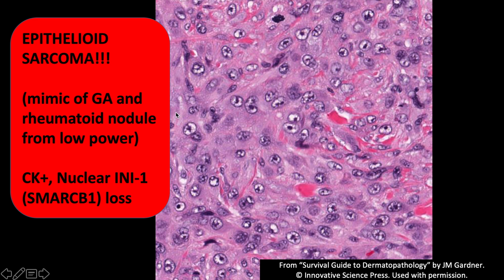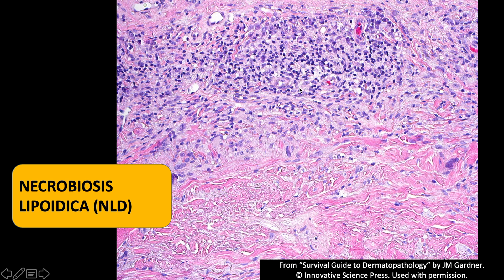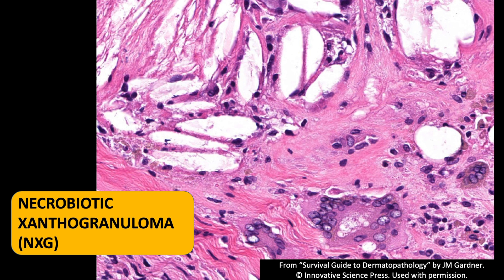This is a layered necrobiotic pattern that you see on the lower legs, sometimes in diabetic patients, called necrobiosis lipoidica. Some people say it has a layered cake arrangement, and you'll see histiocytes, lymphocytes, and plasma cells with more fibrotic and necrobiotic-looking areas. Sometimes if you see that pattern like NLD but with cholesterol clefts and giant cells, you can think of necrobiotic xanthogranuloma, which is pretty rare but important to recognize because it's often associated with a paraprotein and systemic hematolymphoid neoplasms.